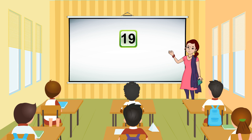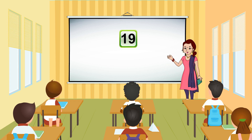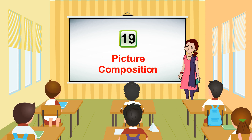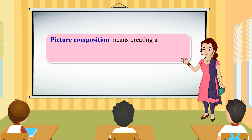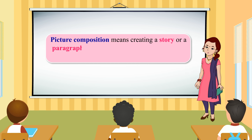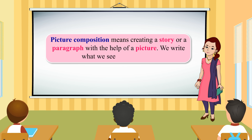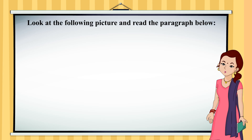Chapter 19: Picture Composition. Picture Composition means creating a story or a paragraph with the help of a picture. We write what we see in the picture. Look at the following picture and read the paragraph below.